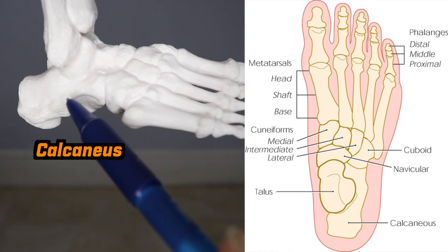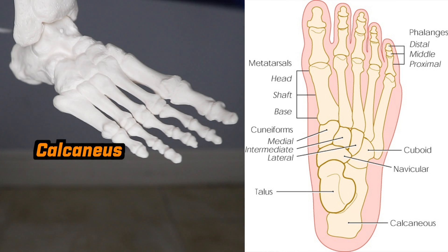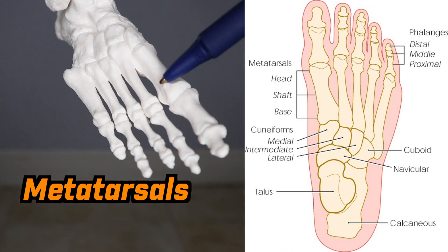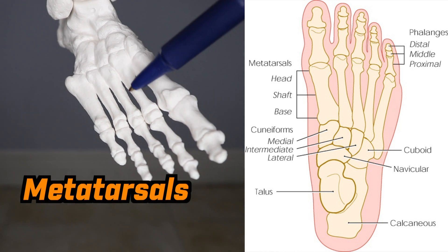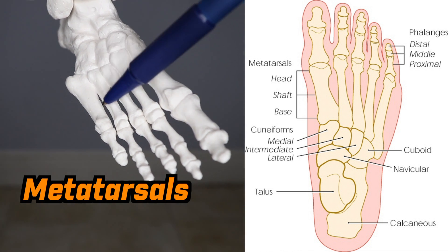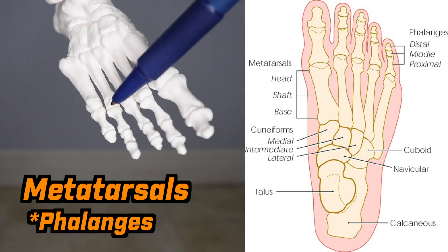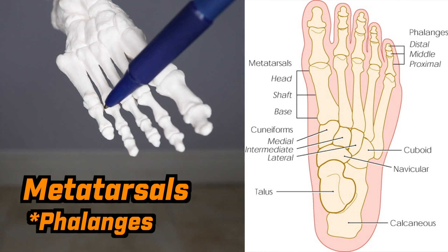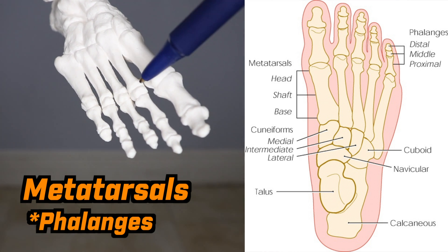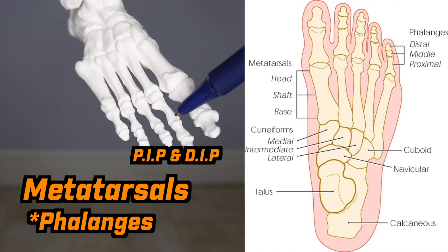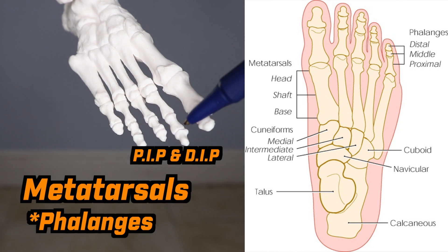As we move anteriorly, we are going to have the metatarsals, which eventually connect to the phalanges via the metatarsal phalangeal joints. Then within your phalanges, you're going to have your proximal interphalangeal joints and your distal interphalangeal joints.